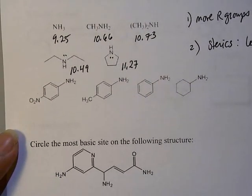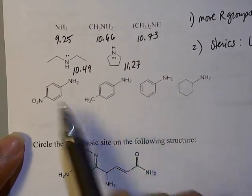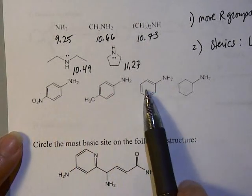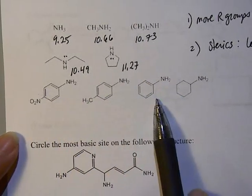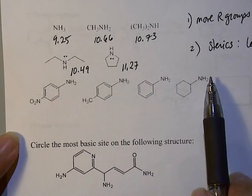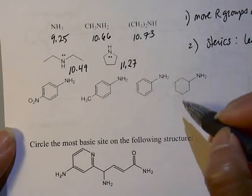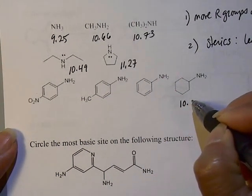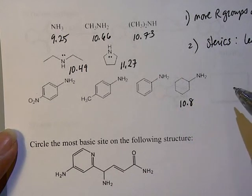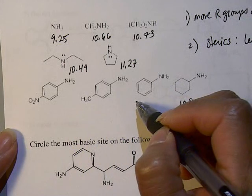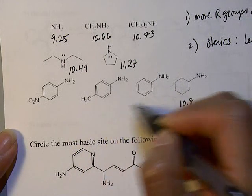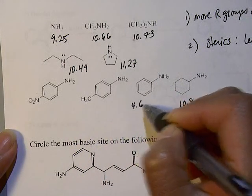All right. And then the last one is, notice that these are anilines, the benzene ring with the NH2 are anilines. So we have three anilines versus cyclohexylamine. All right. If you look at the pKa, cyclohexylamine is 10.8, whereas all these other ones are in the 4.6 range.